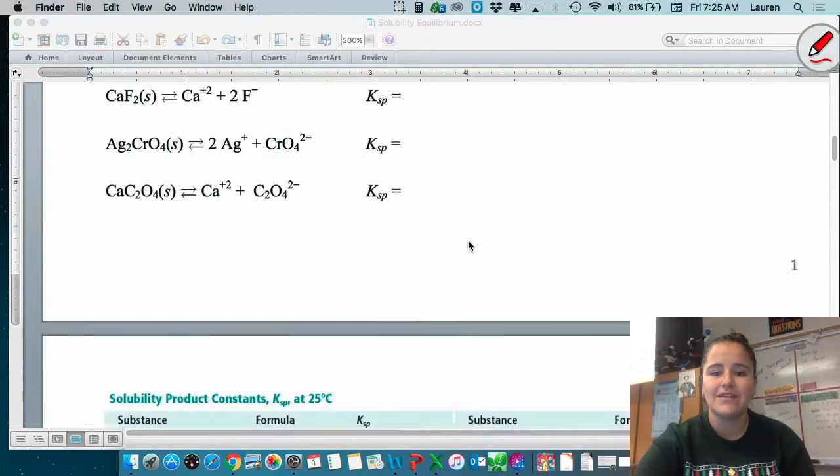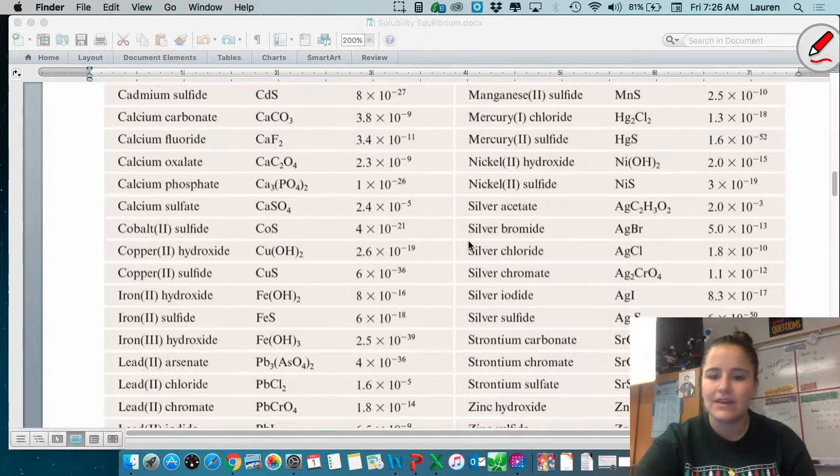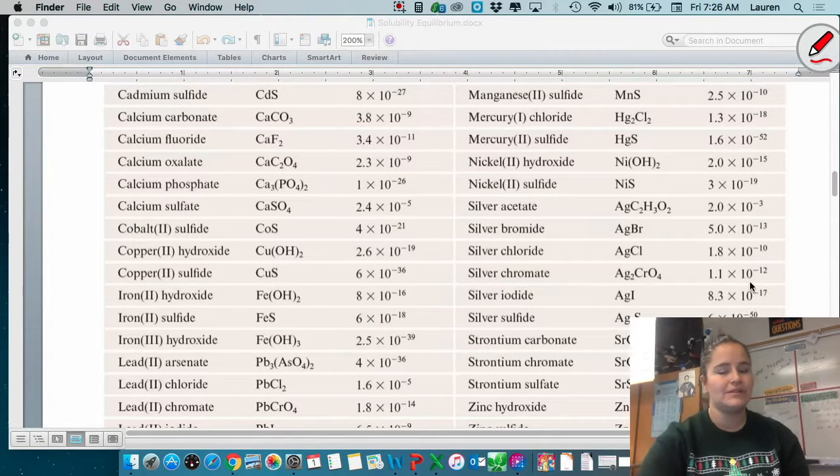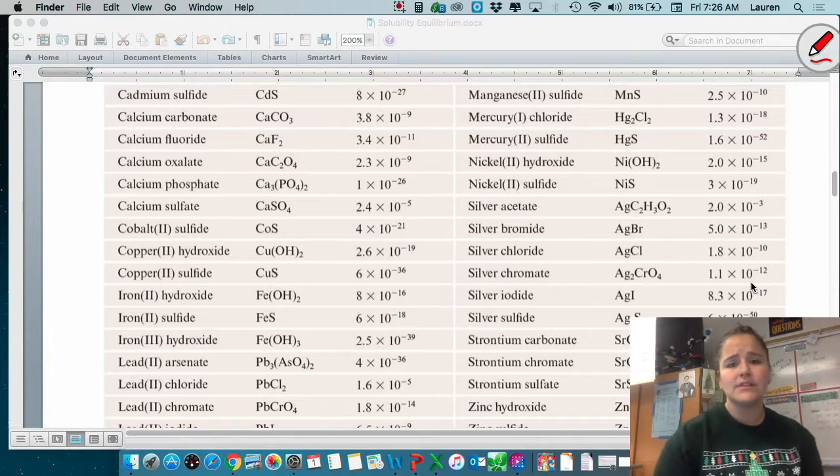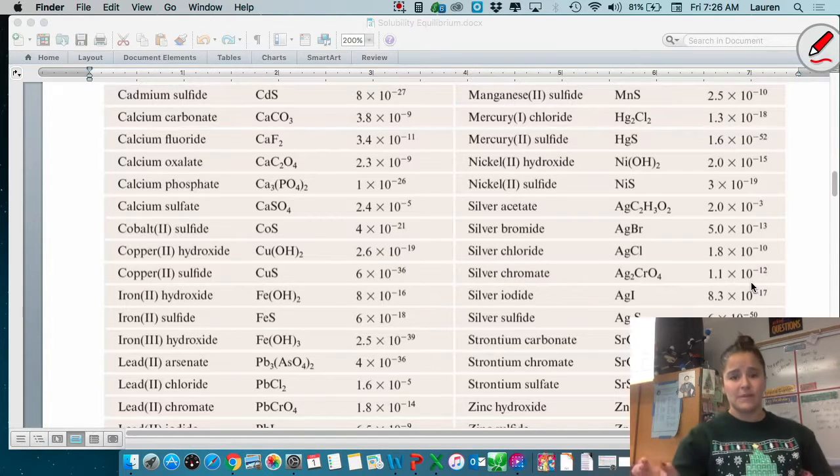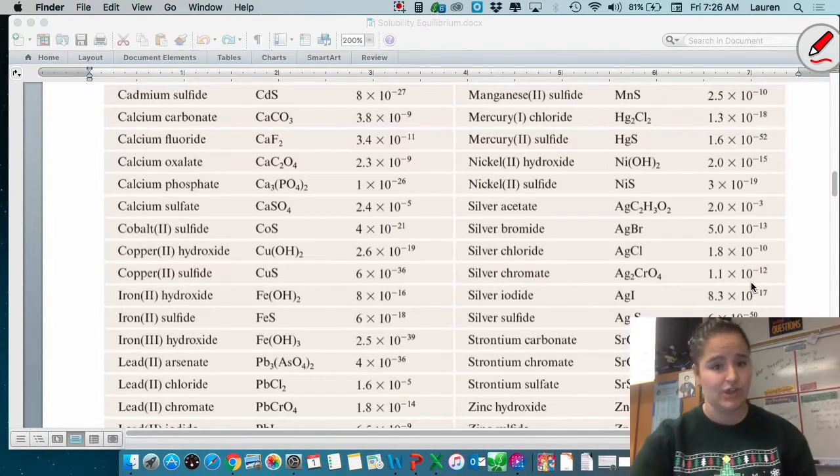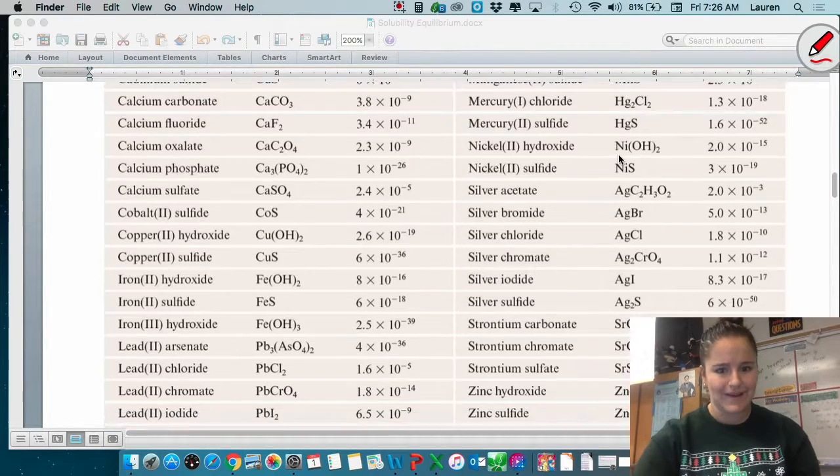For silver chromate, it's going to be 1.1 times 10 to the negative 12. So it's super easy to look it up and this allows us to find out a lot of things about the concentrations of ions in solution. I'll show you guys a little bit about how it's used.